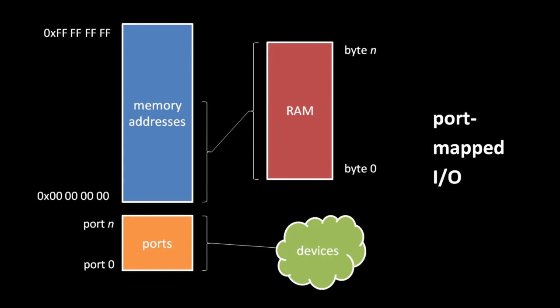Whether a system uses port-mapped or memory-mapped I/O, or even a combination of the two as x86 systems do, the question is how programmers know which addresses and ports are mapped to what. On some systems, these mappings are all hardwired and documented by the hardware makers, but on other systems, including PCs, many mappings are dynamically configured at system startup. Either way, most programmers don't really have to worry about device ports and addresses because direct communication with devices is handled by the operating system.